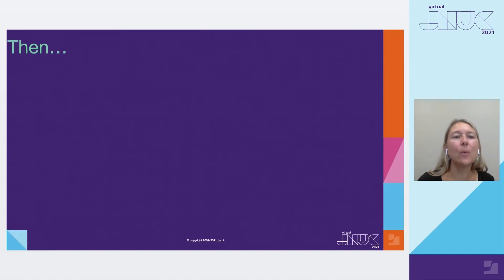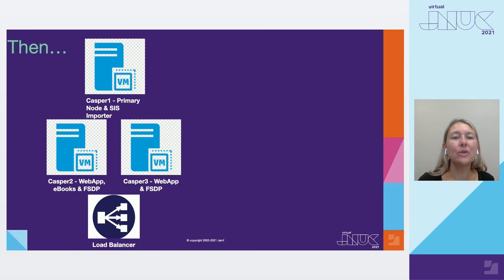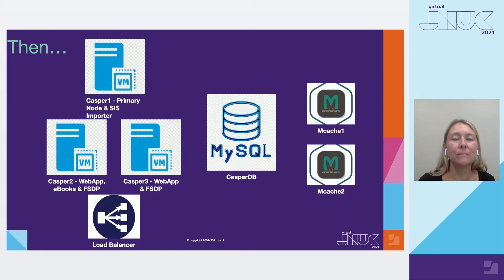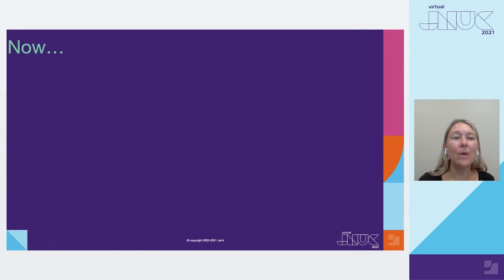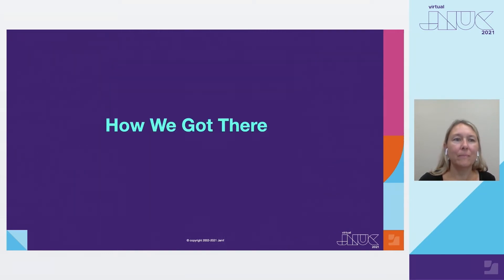Our server setup went from one server running everything to three servers running Jamf Pro — one primary and two web app servers behind a load balancer — a separate server running MySQL, and eventually two MCAS servers. Now we are in the cloud.